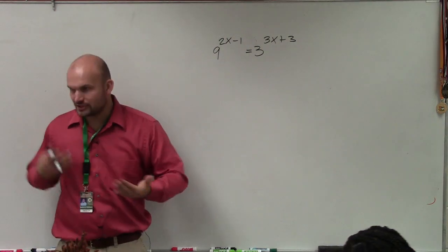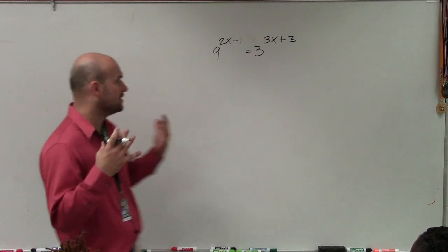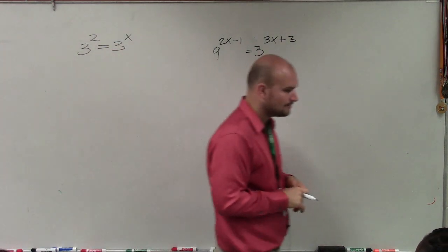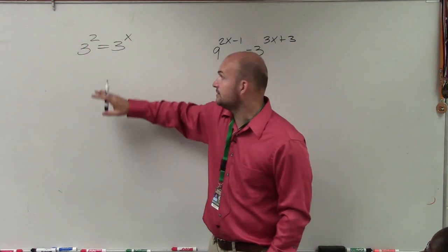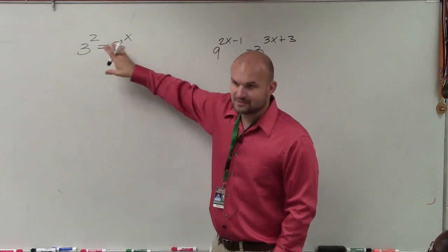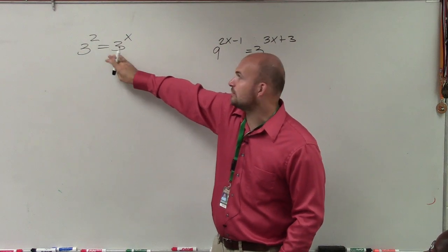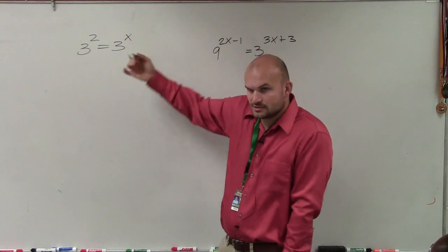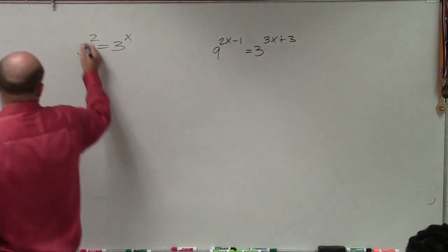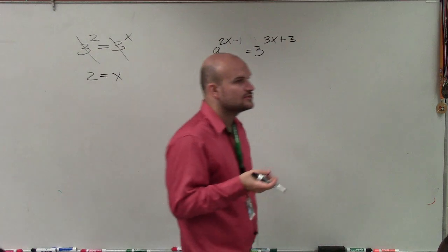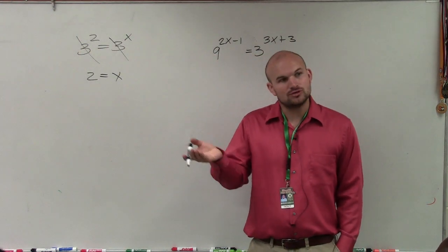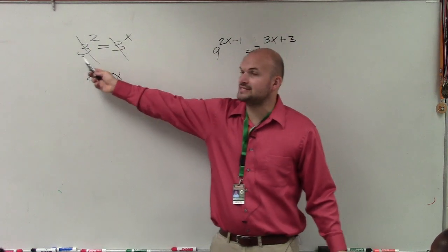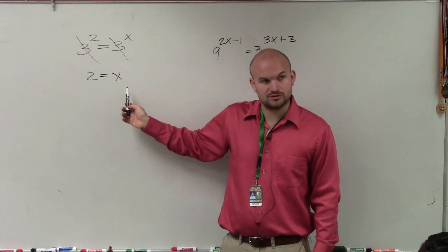This is just a reminder, a refresher, something that also comes back from Algebra 2. So the main property you want to understand to solve this problem is what we call the one-to-one property. Basically what the one-to-one property explains, if you're going to say 3 squared is equal to 3 to the x, if this sentence, if to show that this equation is true, what is the one and only value that we can plug in for x that would make this equation true? 2, right? There's no other number you can use for x that's going to make this equation true. So when you have two exponents with the same base equal to one another, their powers are also equal to each other.